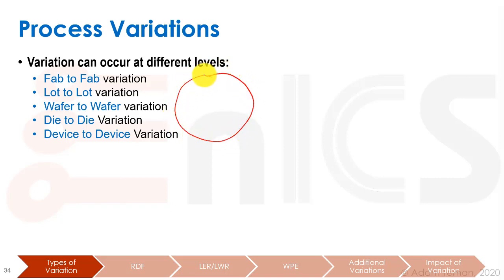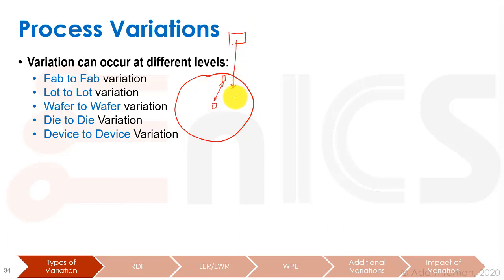If we have a wafer and one die is at the side while another is in the middle, there may be differences between these dies because of proximity effects where a certain process step is applied to them. Also remember our mask for photolithography — the mask is much smaller than the wafer itself, and we step-and-scan projecting the mask across the wafer, so there may be a difference between a die on the side of the mask versus the middle of the mask. That's our die-to-die variation.